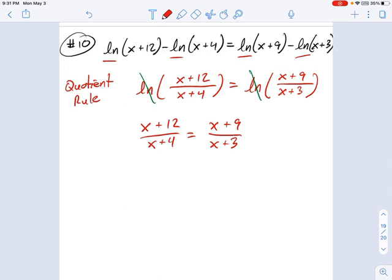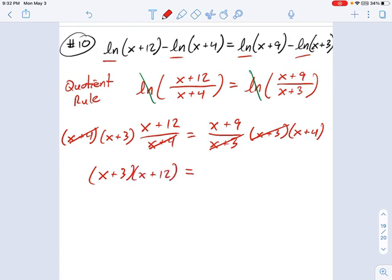Another way you can think about this, if you never learned cross-multiplying, is just this. I'm going to multiply each side by x plus 3, the purpose being I want to cancel out that denominator. I'm also going to multiply each side by x plus 4 to cancel out this denominator. It has the same effect in the end as cross-multiplying. So what we get is x plus 3 times x plus 12 equals x plus 9 times x plus 4.